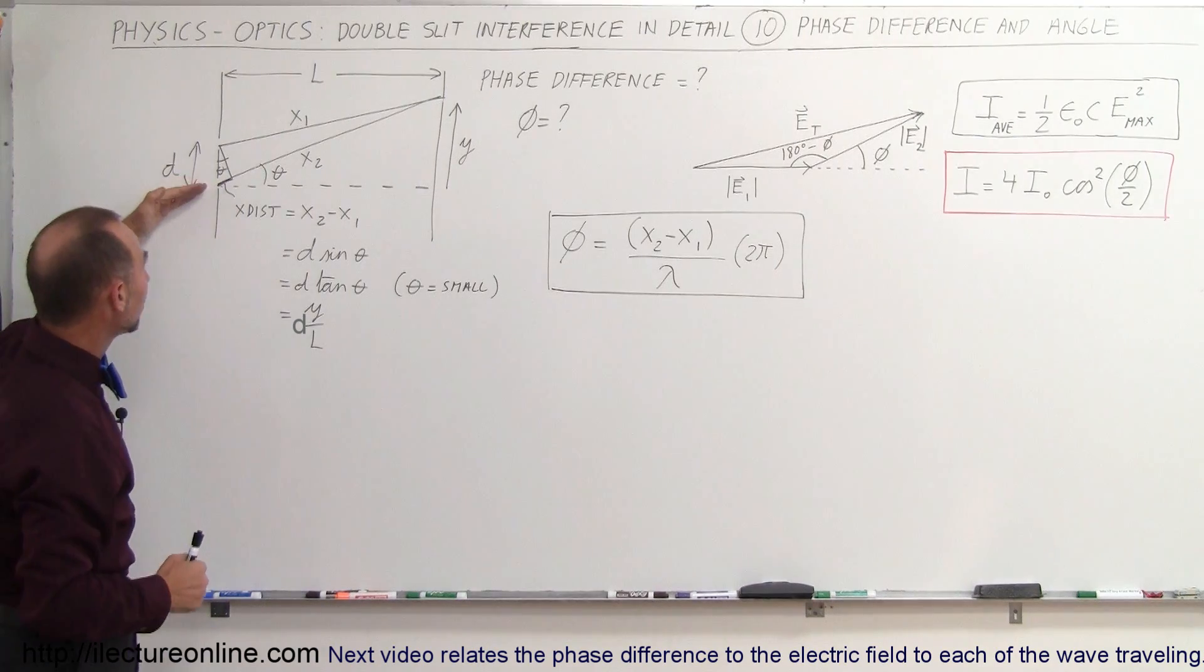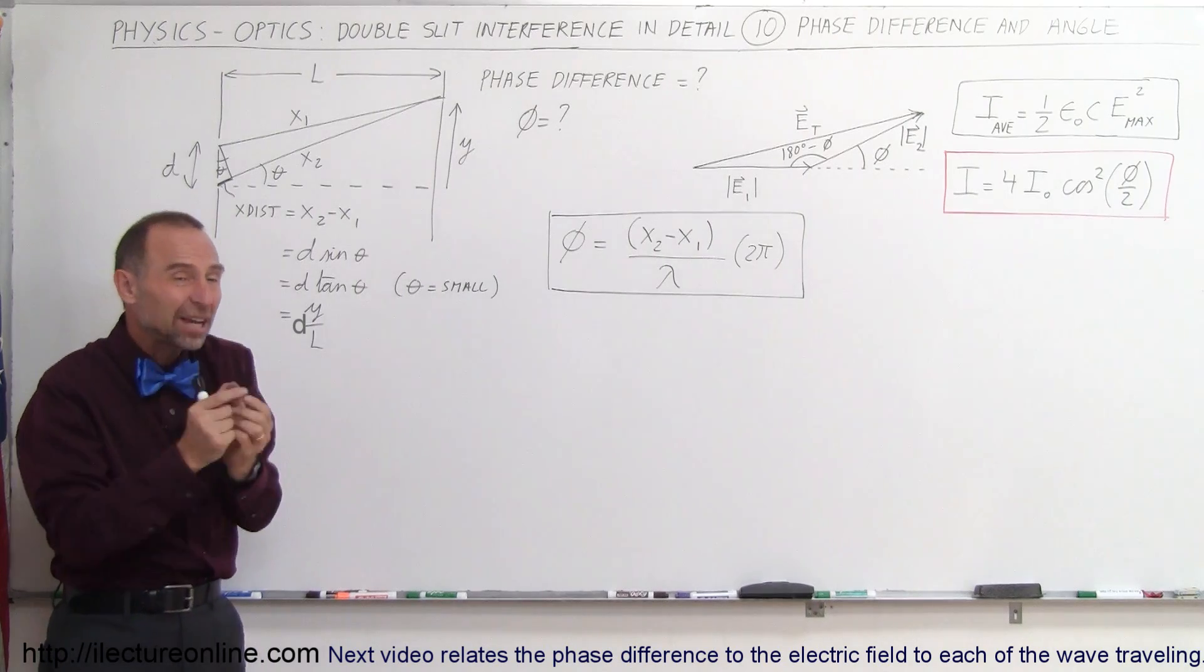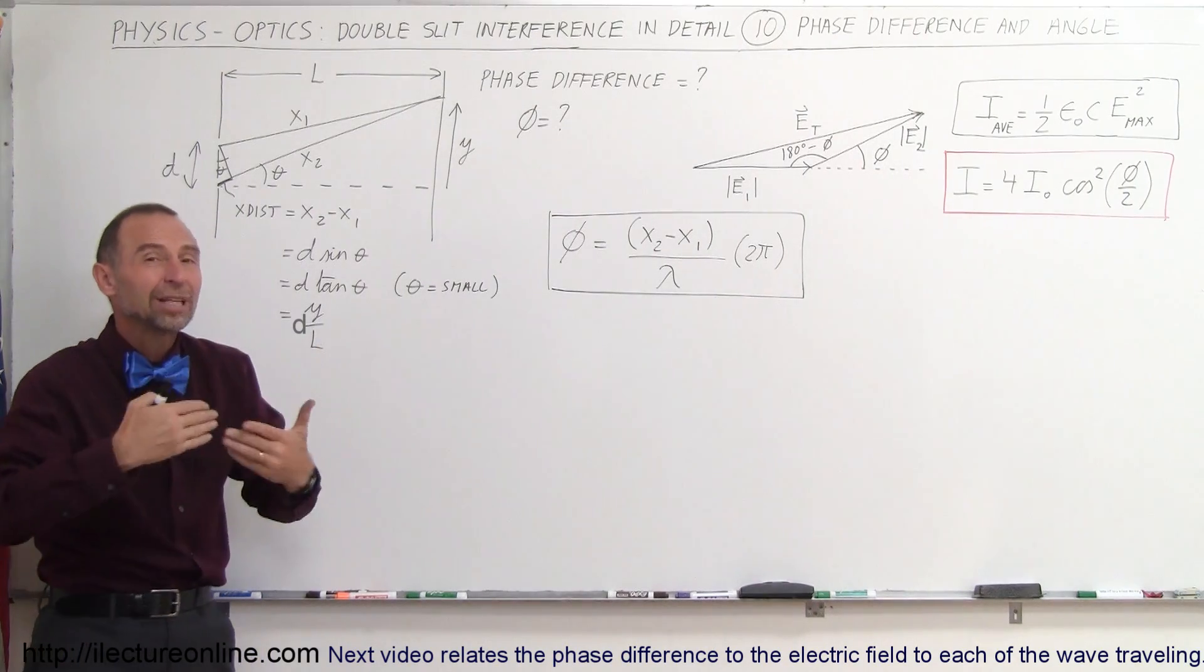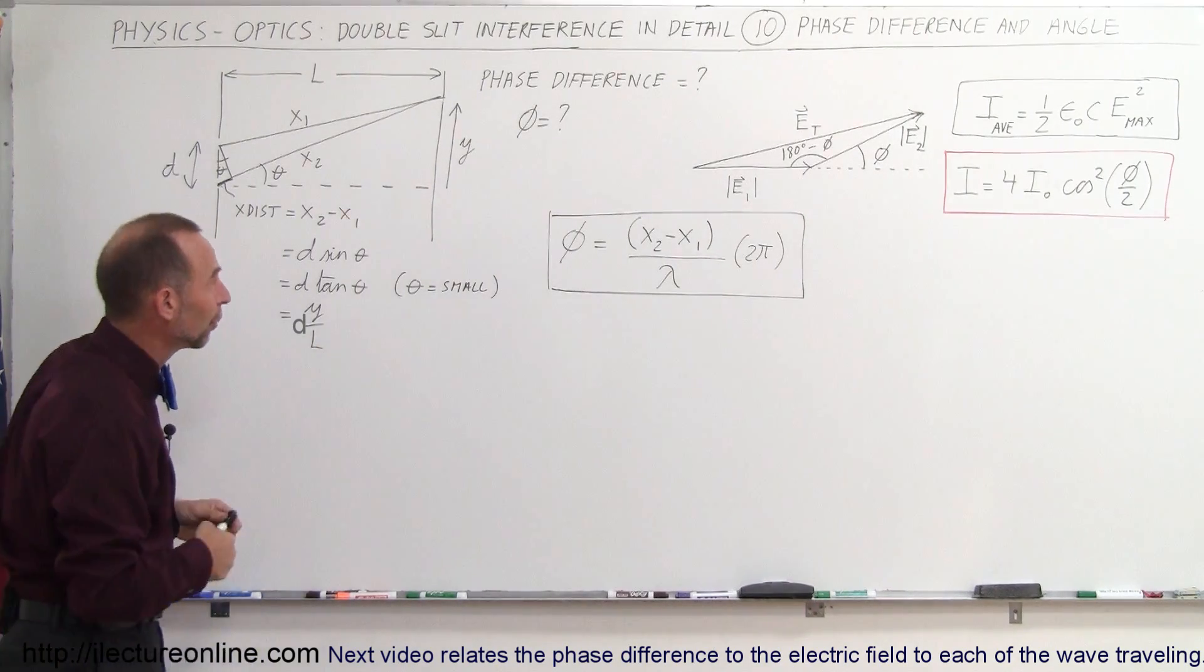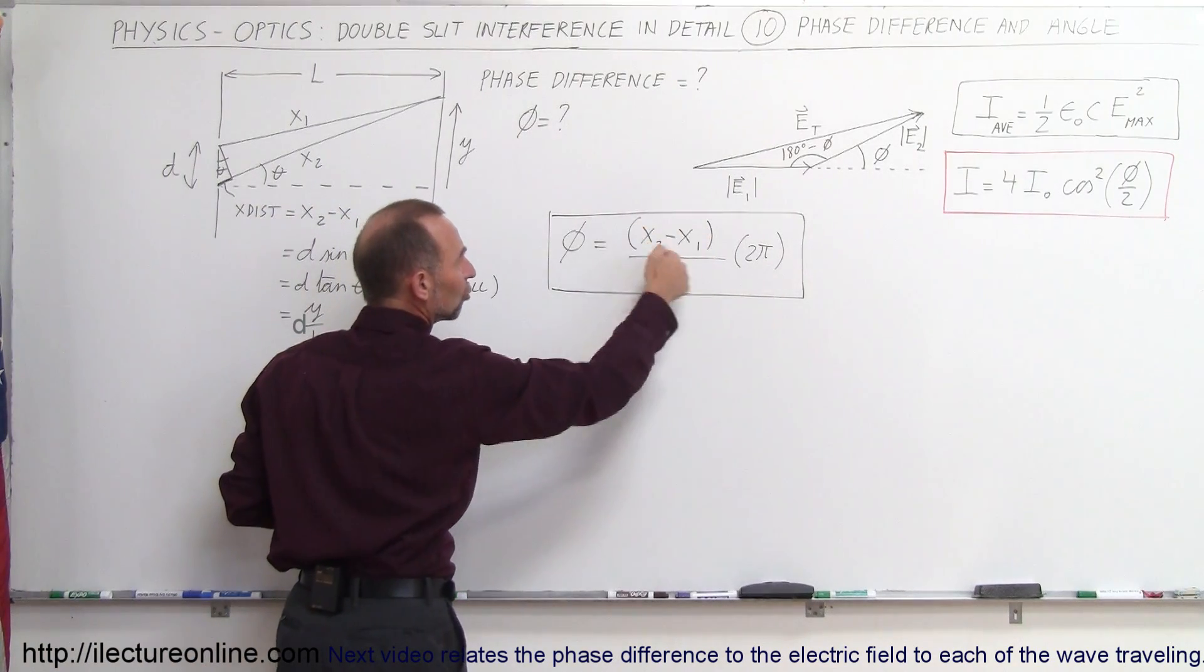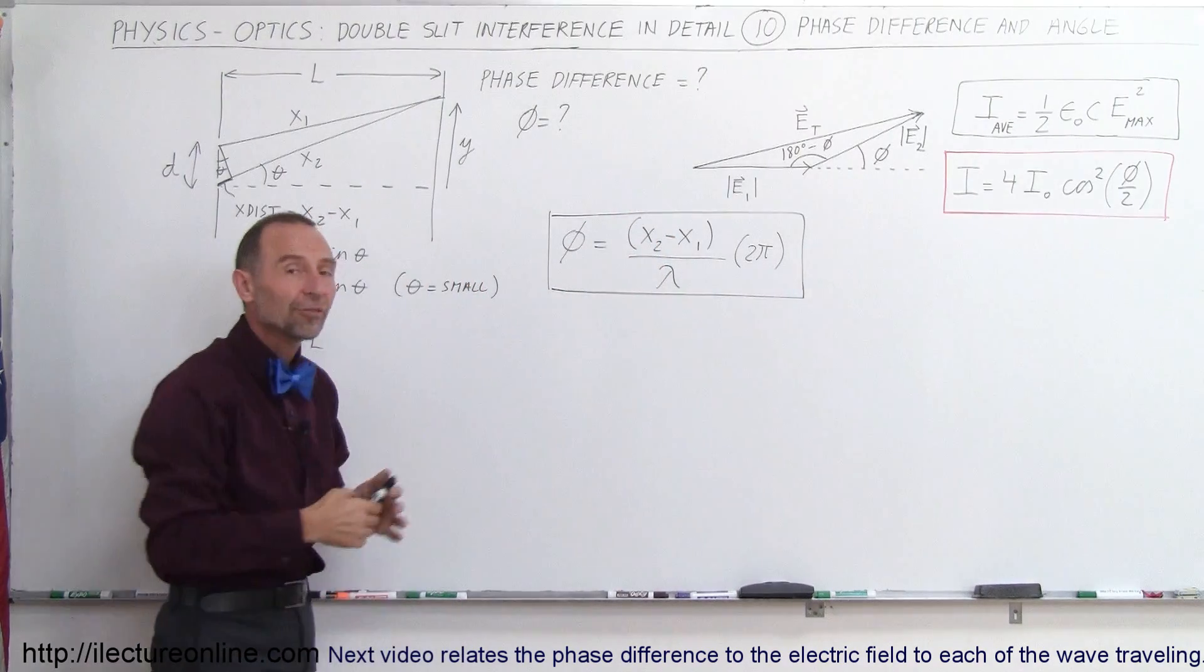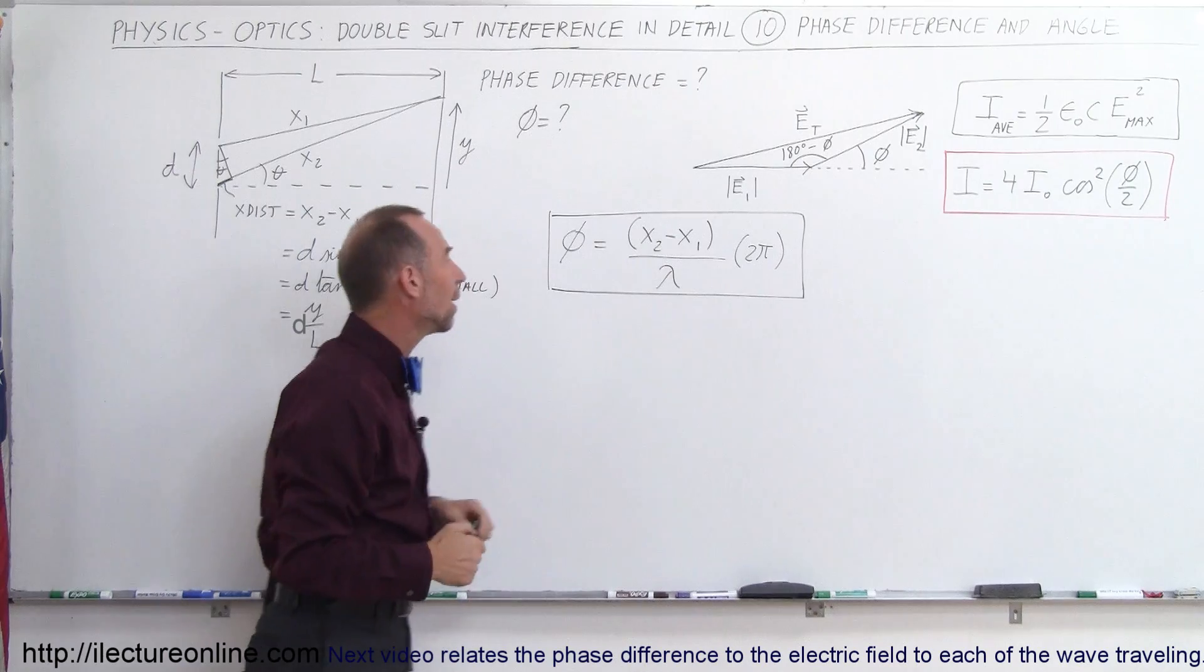That's how much farther the bottom wave has to travel compared to the top wave. And then you want to find out what fraction of a phase, what fraction of a complete wavelength is that. So the way to find that is simply the extra distance traveled divided by the wavelength, which is usually a fraction of a wavelength, or maybe 1.3 or 1.5, maybe 1 plus a fraction of a wavelength, times 2 pi.